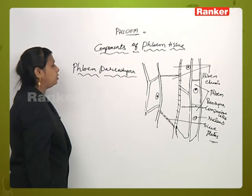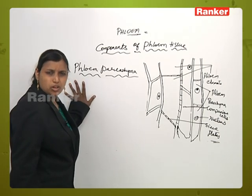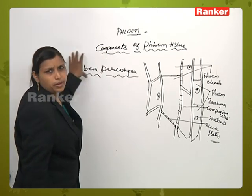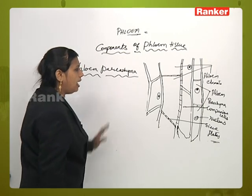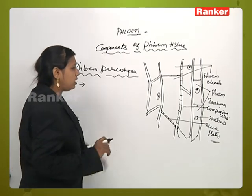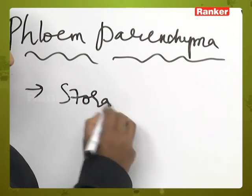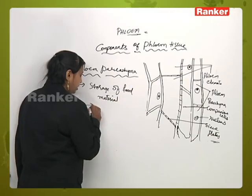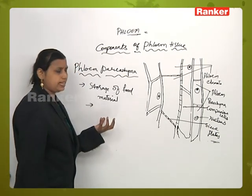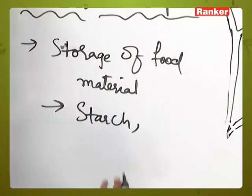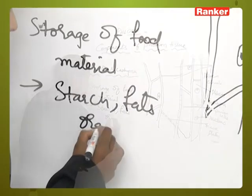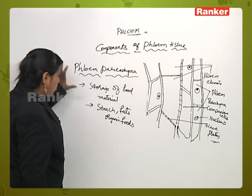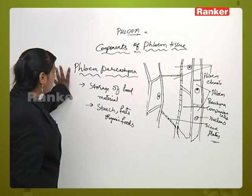One more component of phloem tissue is phloem parenchyma. Just as parenchyma present in xylem tissue is called xylem parenchyma, parenchyma present in phloem is called phloem parenchyma. The function of phloem parenchyma is storage and translocation of food material. It stores food in the form of starch, fats, and other organic food substances and reserved food materials required for the phloem component.